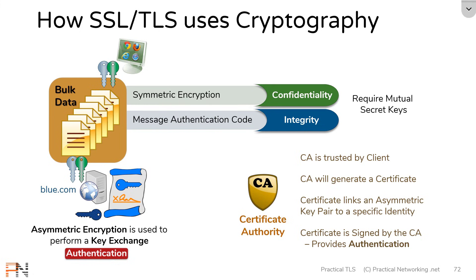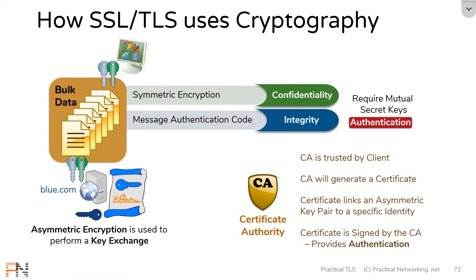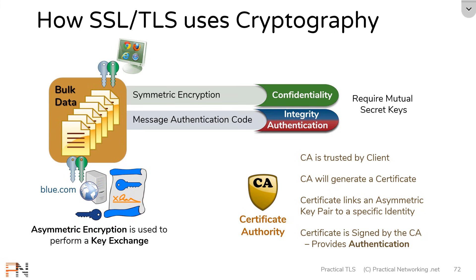Any symmetric key derived from those authenticated asymmetric keys also inherits that authentication. Which means any message authentication code performed with symmetric keys derived from authenticated asymmetric keys also provides the service of authentication. That is how SSL and TLS provide confidentiality, integrity, and authentication to data on the wire.